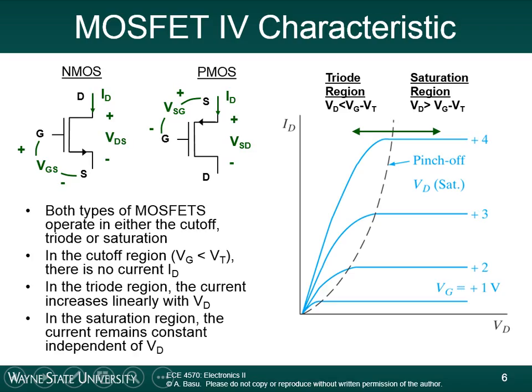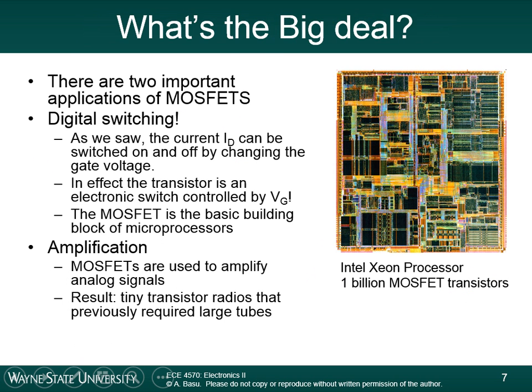The IV characteristics show a line that curves off and forms a horizontal line. All these different curves are at different values of gate voltage. This material should look familiar from Electronics One. We'll come back to this — I want to get into some of the intuition of the MOSFET today so that we can come back to it next time.